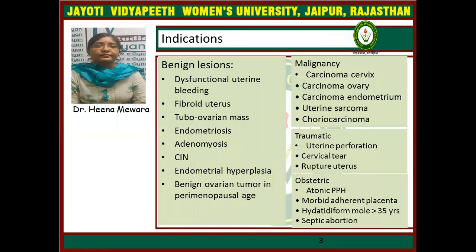Now, indications. Hysterectomy is indicated for benign lesions like dysfunctional uterine bleeding, fibroid uterus, tubo-ovarian mass, endometriosis, adenomyosis, cervical intraepithelial neoplasia, endometrial hyperplasia, or benign ovarian tumor in the perimenopausal case.